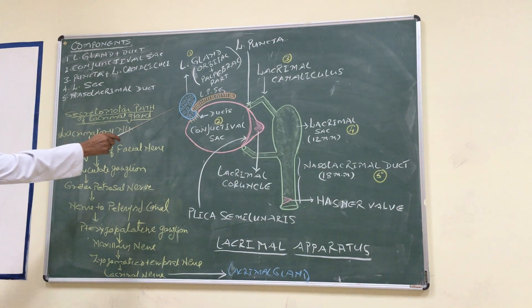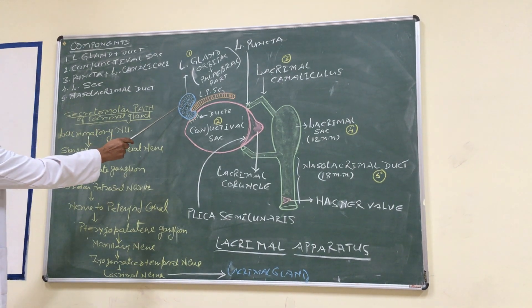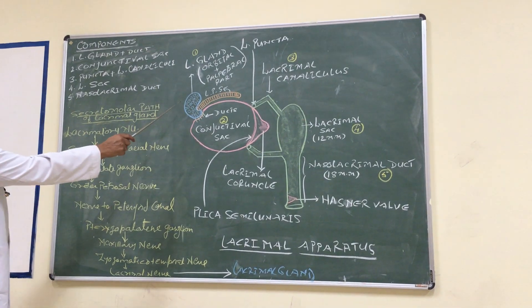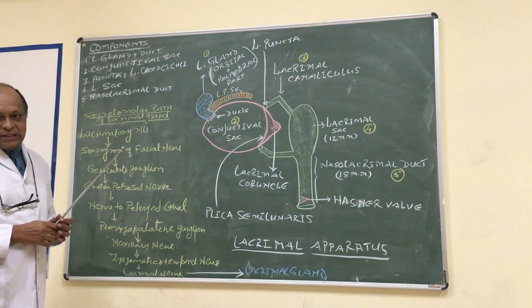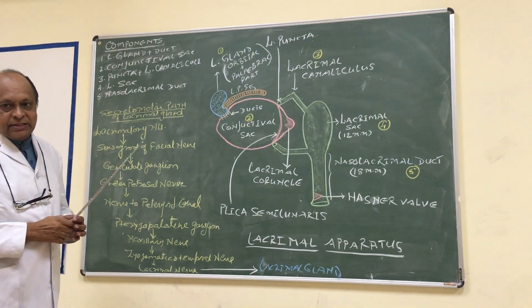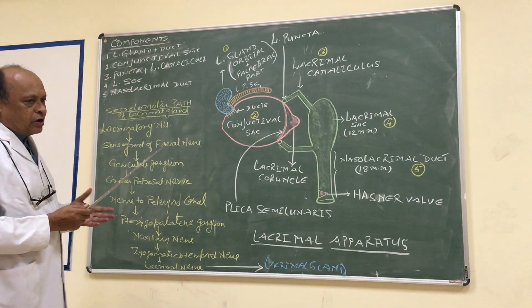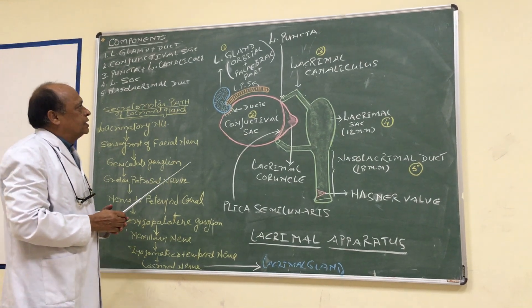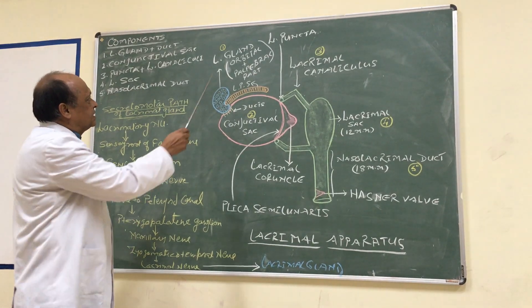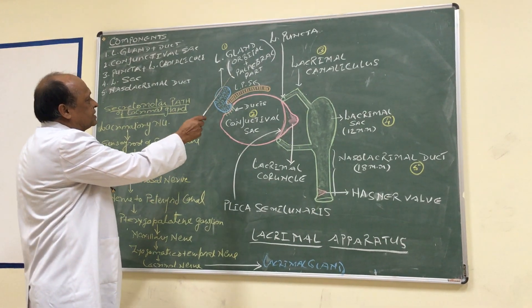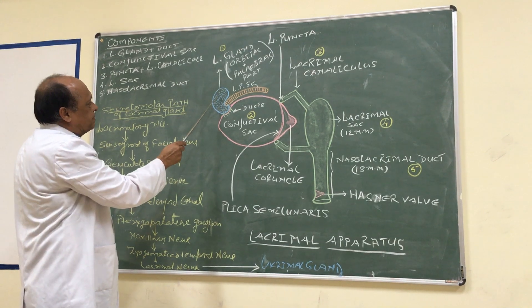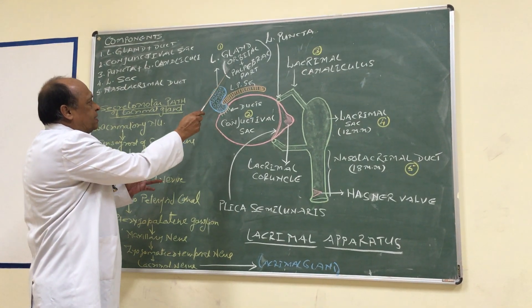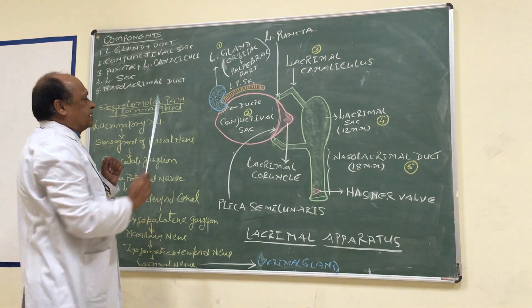This lacrimal gland, as the name indicates, secretes lacrimal fluid — you may call it a tear. Lacrimal fluid and tear are one and the same thing. This lacrimal gland has two parts: the orbital part and the palpebral part.